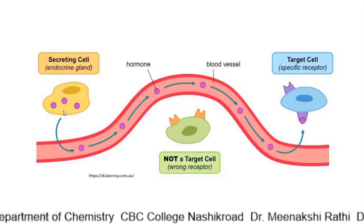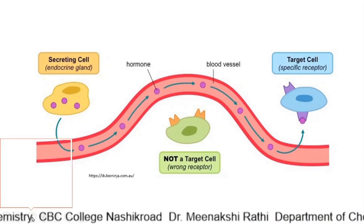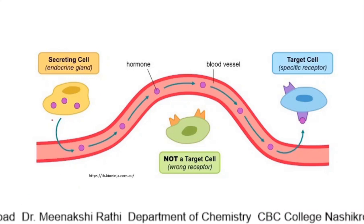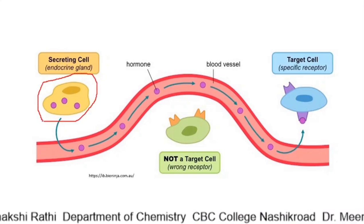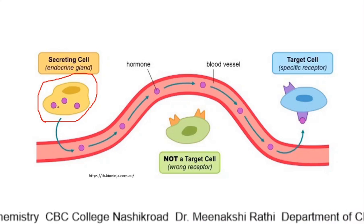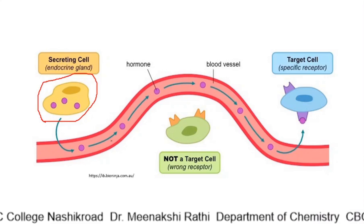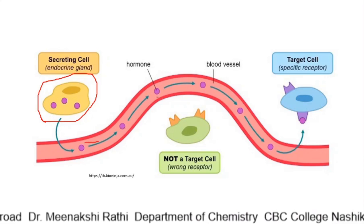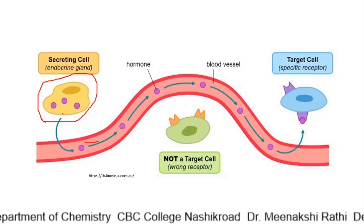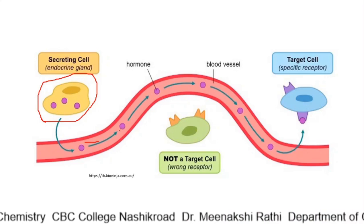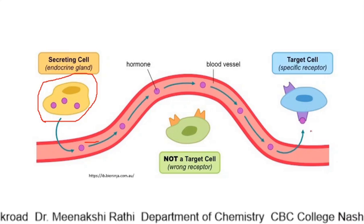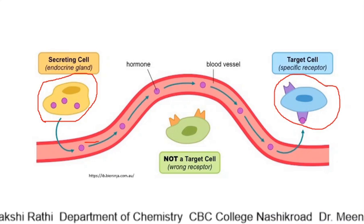In this picture you can see one gland — this yellow color — it is a specialized gland or secreting cell, also called an endocrine gland. These endocrine glands are secreting purple color balls, which are nothing but hormones, into a red color blood vessel.